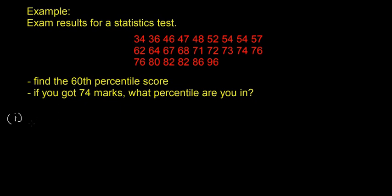So for the 60th percentile score, there are 24 results all together, and we're looking for the 60th out of 100 percentile score. So percentiles are always out of 100. So we go 60 over 100 multiplied by 24.